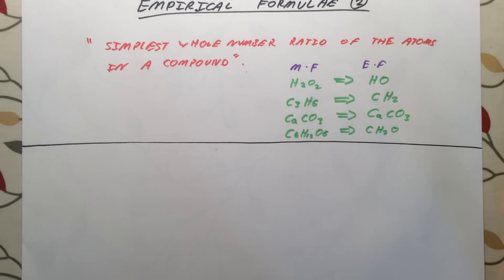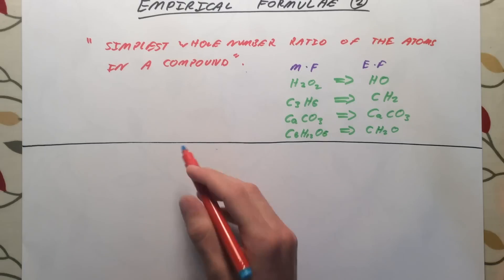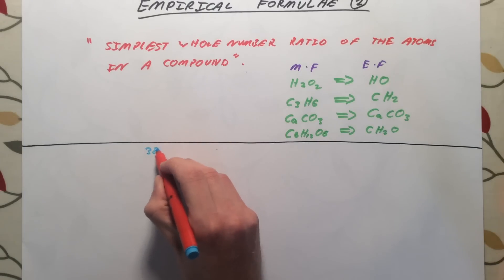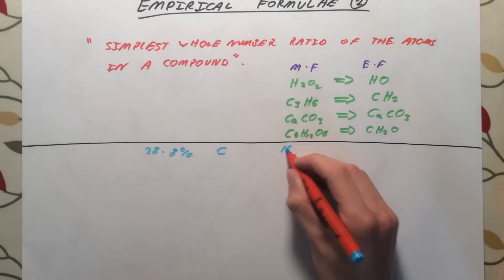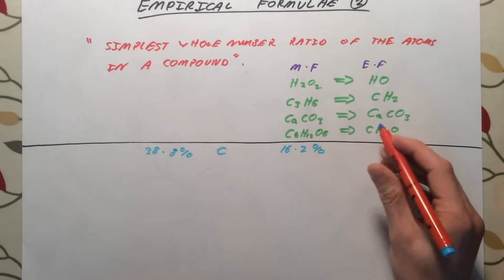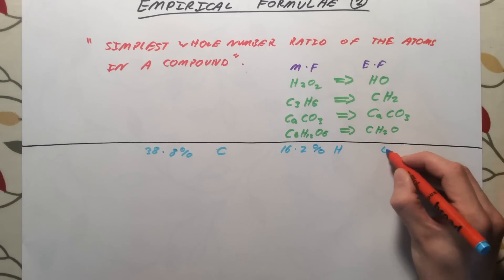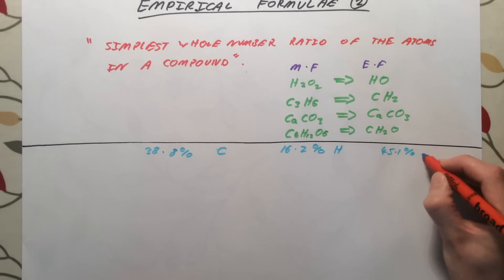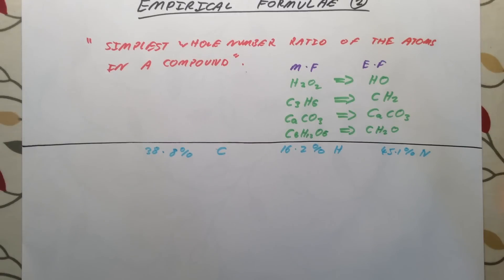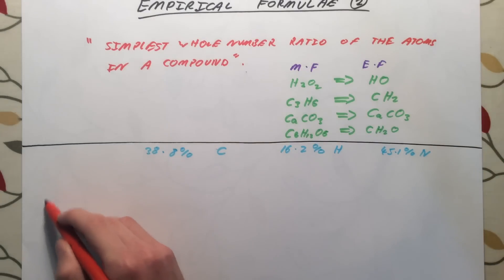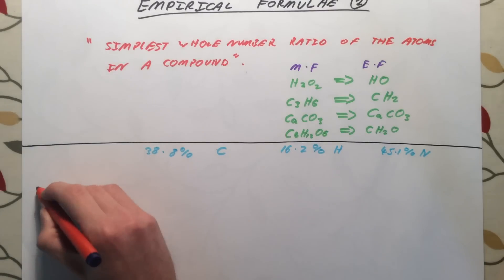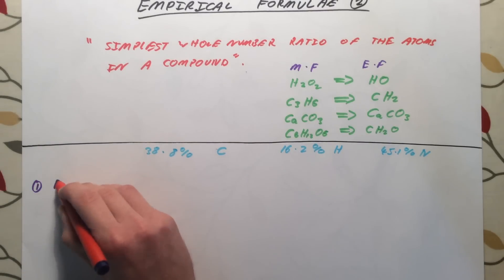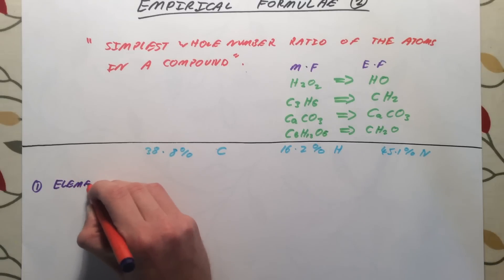So let's do a couple of examples. The first one is relatively straightforward. In this question, we are told that 38.8% of the mass of a compound comes from carbon atoms, 16.2% comes from hydrogen atoms, and 45.1% comes from nitrogen atoms. There is a set method we are going to use — it's the same for every question. I'll write out the steps and show you how to work out the empirical formula.